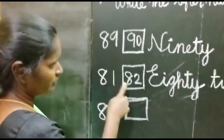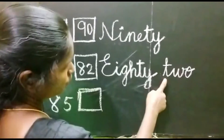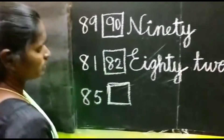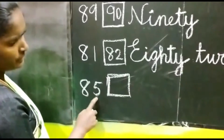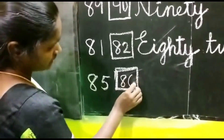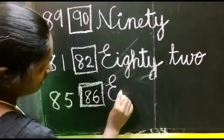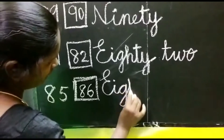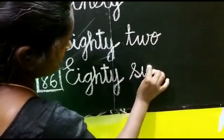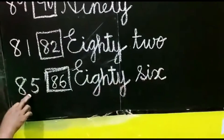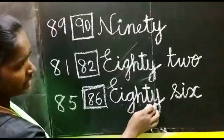Got it right? 81 after number is 82. 82, ready to spell? E-I-G-H-T-Y. 82. T-W-O. 82. Next number: 85 after number is 86. 86 spelling: E-I-G-H-T-Y. 86.